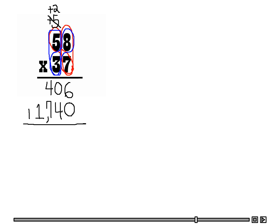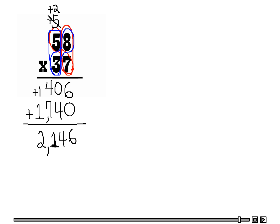So now what I am going to do is add. 6 plus 0 is 6, 0 plus 4 is 4, 4 plus 7 is 11 — I am going to carry over 1 to the thousands place, so 1 plus 1 is 2. Our final answer is 2,147.